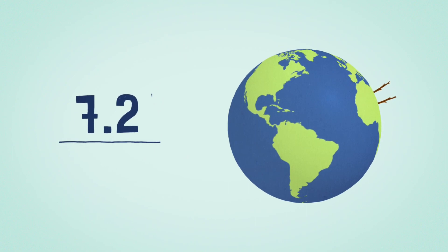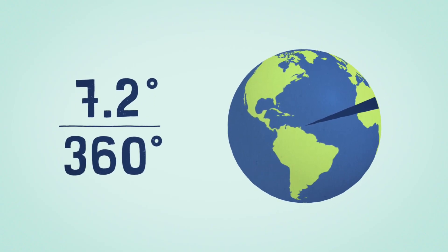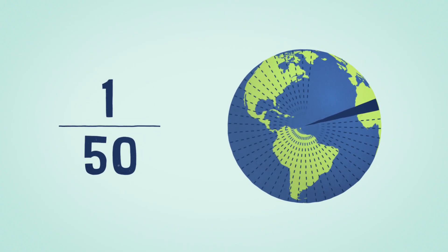Moreover, he knew that 7.2 degrees wasn't just the angle of a shadow, it was the distance between those two cities on a 360 degree globe. 7.2 degrees is 1/50th of a circle.